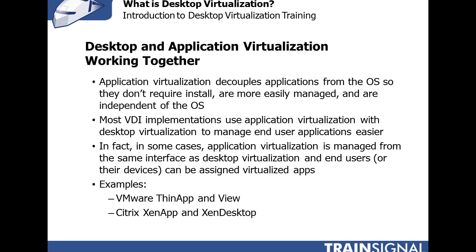Most VDI implementations today use application virtualization with desktop virtualization to make it easier to manage end user applications, because application virtualization separates the applications from the operating system. You can manage end user virtual machines in three distinct pieces: the operating systems, the applications, and the end user data. In some cases, application virtualization is managed from the same interface as the desktop virtualization solution, and end users or their devices can be assigned individual virtualized applications. Examples include VMware View with ThinApp, and Citrix XenApp with Citrix XenDesktop.